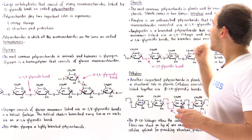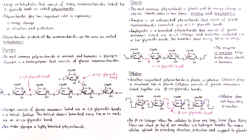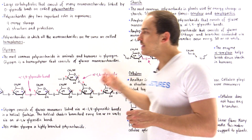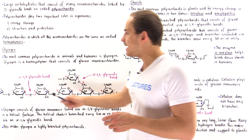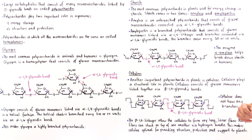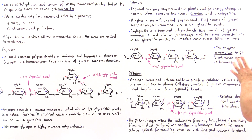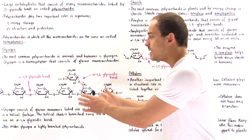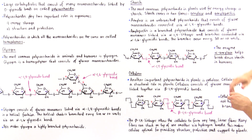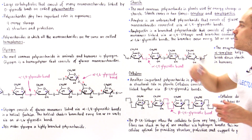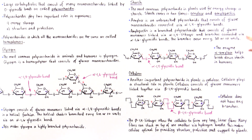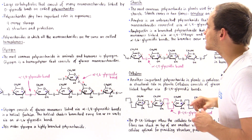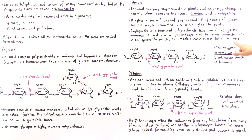The other type of starch molecule is amylopectin, and amylopectin is essentially almost the same as glycogen because amylopectin, just like glycogen, contains both alpha-1,4 glycosidic bonds and alpha-1,6 glycosidic bonds. The only difference between amylopectin and glycogen is that in amylopectin, the alpha-1,6 glycosidic bonds are less common. In glycogen they appear every 10 or so units, but in amylopectin they appear every 30 or so units.